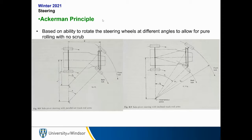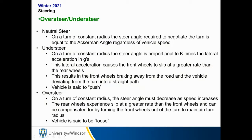I'm not necessarily concerned with people being able to make the Ackerman principle calculation, but it is important to be aware that it exists. Moving to over and understeer — let's define neutral steer first. Neutral steer means that on a turn of constant radius, the steer angle required to negotiate the turn is equal to the Ackerman angle regardless of vehicle speed.